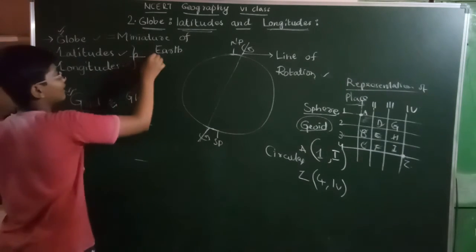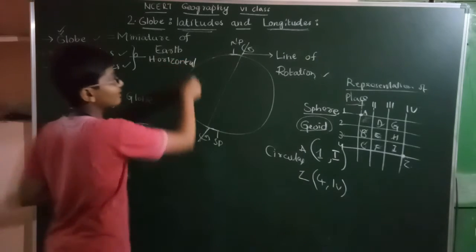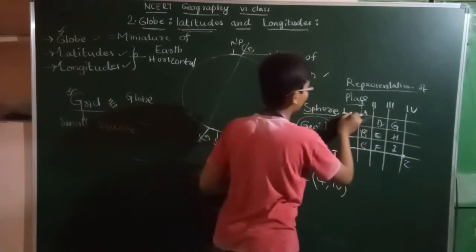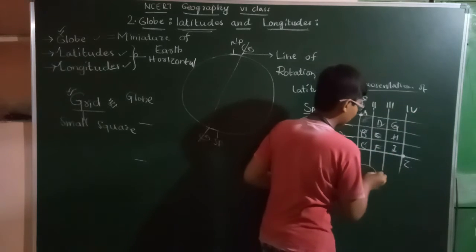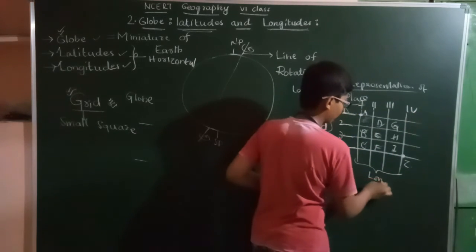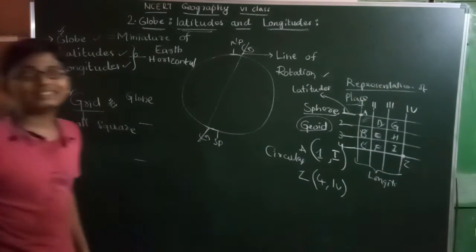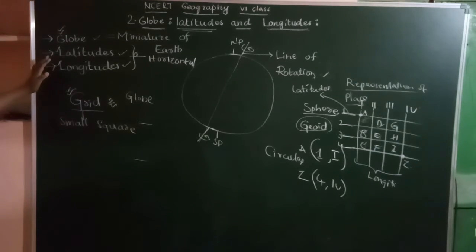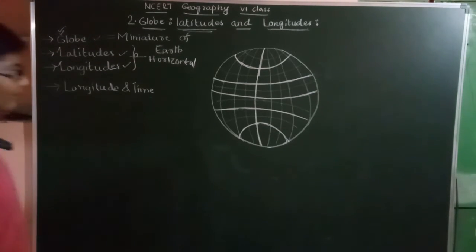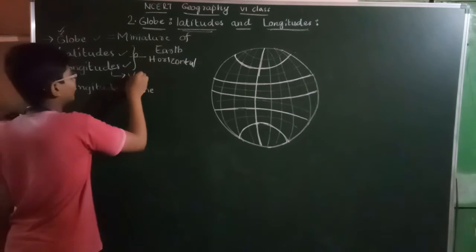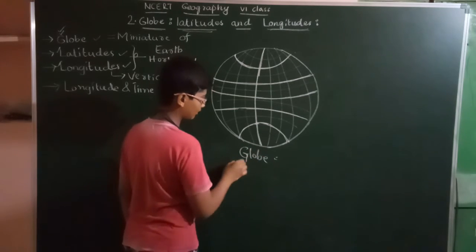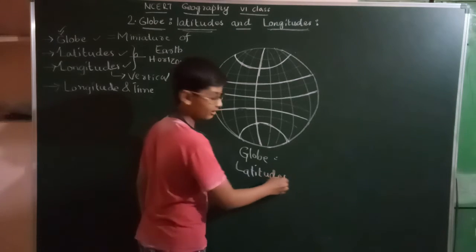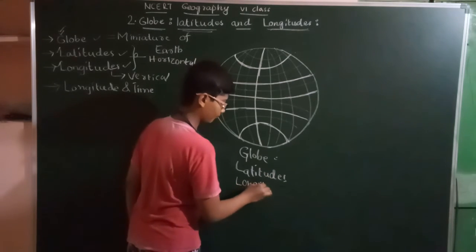Latitudes are horizontal lines and longitudes are vertical lines. These lines together form a grid on the globe. Looking at this globe with latitudes and longitudes, the darkly marked ones are the important latitudes and longitudes.